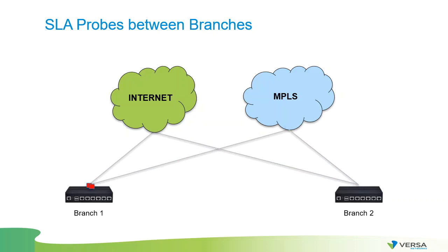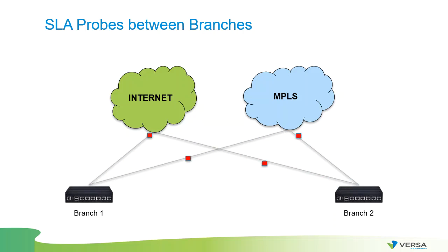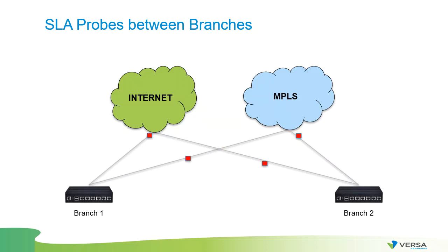Branch one will be sending these probes over all available paths to branch two. At the same time, branch two will have its own probes that it's going to be sending to branch one to measure the connectivity from the branch two side. It's worth mentioning that each tenant will send its own probes to the other side. So if we have two tenants on each branch, the number of probes will double; three tenants means three sets of probes, and so on.